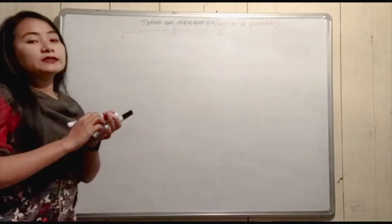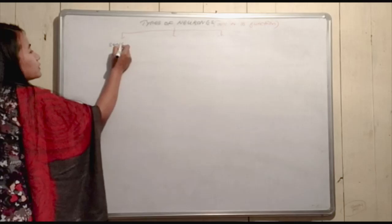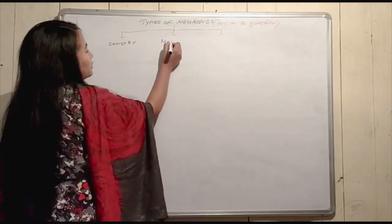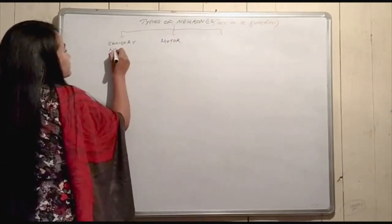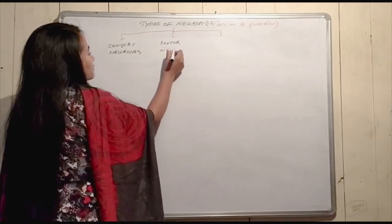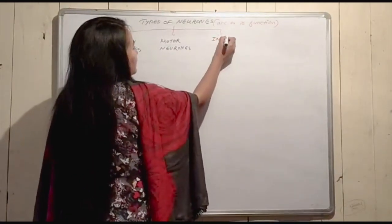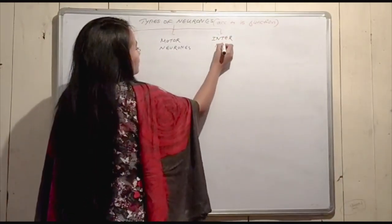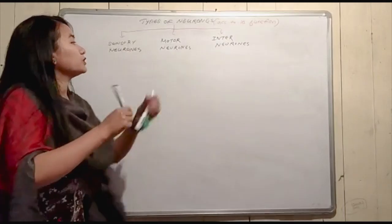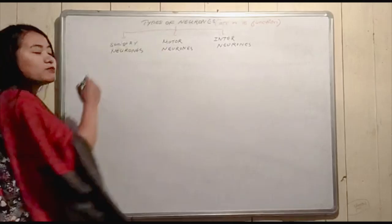We can divide neurons into three types. Number one: sensory neuron. Number two: motor neuron. Number three: inter-neuron. There are also mixed neurons. So we have sensory neuron, motor neuron, inter-neuron, and mixed neurons.